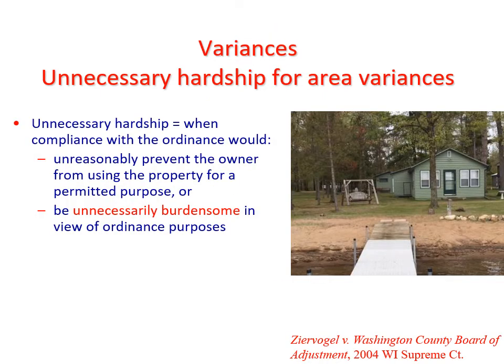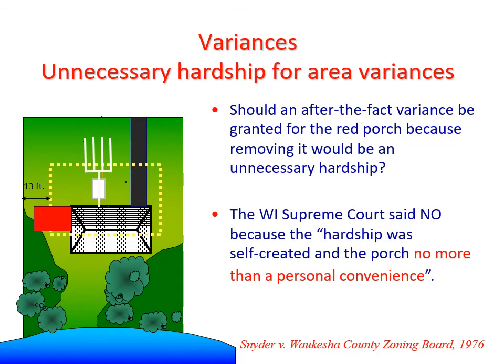Unnecessary hardship for variances is present when compliance with the ordinance would do one of two things. First, unreasonably prevent the owner from using the property for a permitted purpose. For example, if a lot is zoned residential, would complying with the ordinance prevent the lot from being used for a home? If the property owner is already living in a home on the lot, then they're not prevented from using the property for residential use. Unnecessary hardship can also be present when compliance with the ordinance would be unnecessarily burdensome in view of ordinance purposes. We have a Wisconsin Supreme Court case decision on what 'unnecessarily burdensome' means — it is known as Snyder versus Waukesha County Zoning Board.